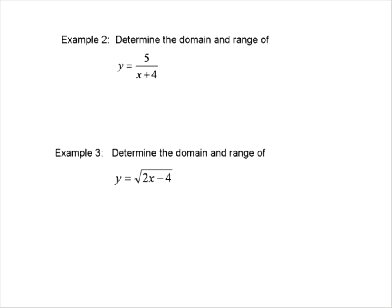That would be a restriction on the denominator, so a restriction on this relation. If we're trying to determine what the domain is — what the possible X values are — then our denominator, X plus 4, cannot equal 0. If that equaled 0, we would have a relation that does not work, does not make sense. So we can solve this and say that X cannot equal negative 4. And that is our domain: X cannot equal negative 4.